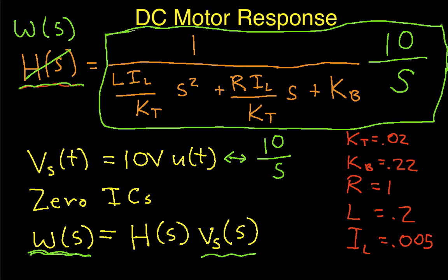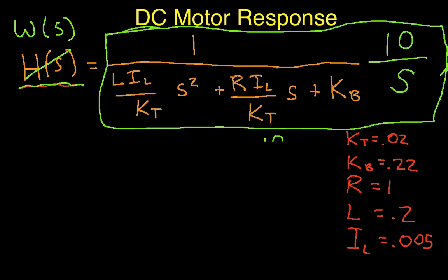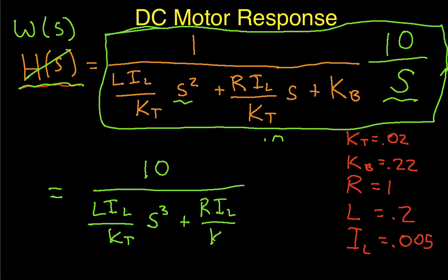And I'll simplify this just a little bit, I guess, before going to MATLAB to ask it to do the computations. So Omega of S is going to be 10 over this constant, I L over KT, S cubed, because I'm multiplying this S by this guy, plus this constant, S squared, plus KB S.